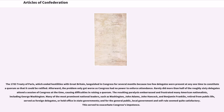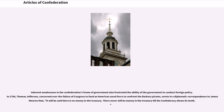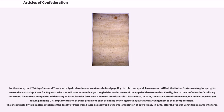Many of the most prominent national leaders, such as Washington, John Adams, John Hancock, and Benjamin Franklin, retired from public life, served as foreign delegates, or held office in state governments. This served to exacerbate Congress's impotence. Inherent weaknesses in the Confederation's frame of government also frustrated the ability of the government to conduct foreign policy. In 1786, Thomas Jefferson, concerned over the failure of Congress to fund an American naval force to confront the Barbary pirates, wrote to James Monroe: 'It will be said there is no money in the Treasury. There never will be money in the Treasury till the Confederacy shows its teeth.'